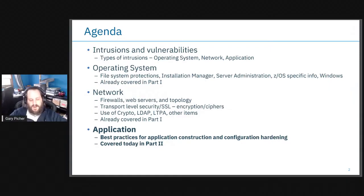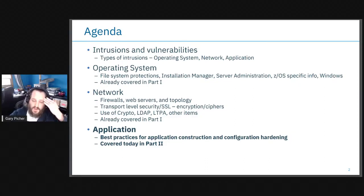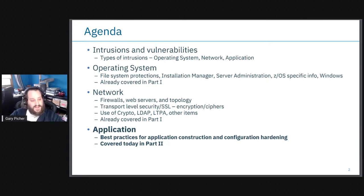So the agenda. I'm going to briefly go over something I did in part one — the types of intrusions and vulnerabilities I'm addressing — and I'm going to break them into three areas: operating system, network, and application. If you're interested in a deeper dive on the operating system and network areas, that was covered back in part one. Today in part two, I'm going to talk about application security hardening.